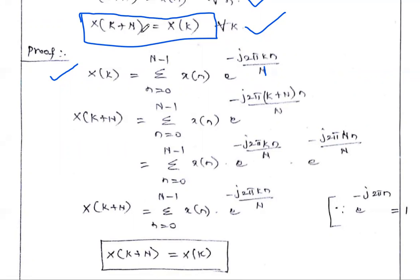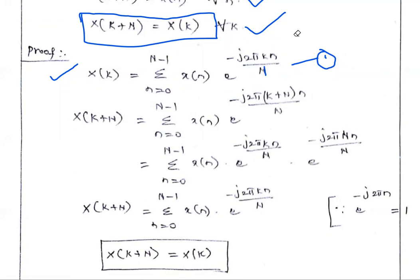In equation one, in the place of k, substitute k + N. So the left-hand side becomes X(k + N), and the right-hand side becomes summation from n = 0 to N−1 of X(n) · e^(−j2π(k+N)n/N).